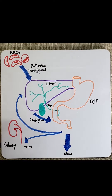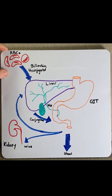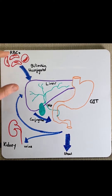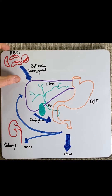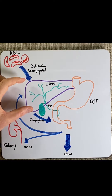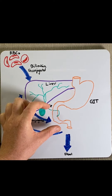Jaundice occurs when bilirubin in the blood exceeds three milligrams per litre. This occurs when there's an imbalance of either too much bilirubin produced or not enough being excreted. Mechanisms that cause jaundice can be broken into three categories: pre-hepatic, before the liver; hepatic, caused by the liver; and post-hepatic, after the liver.